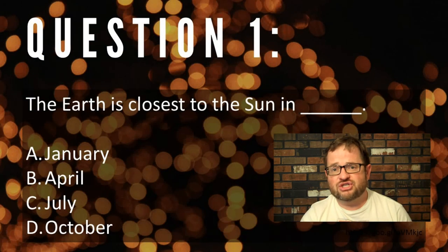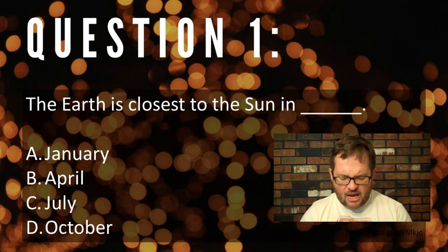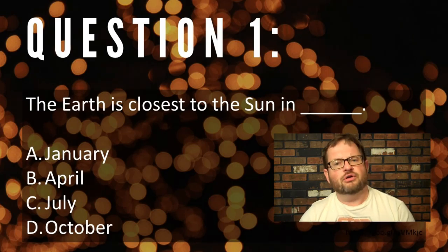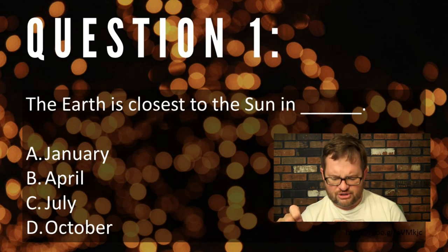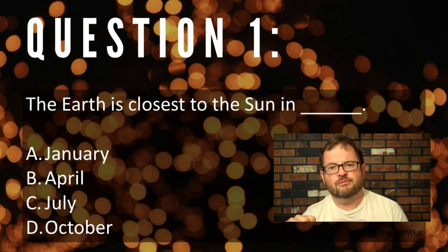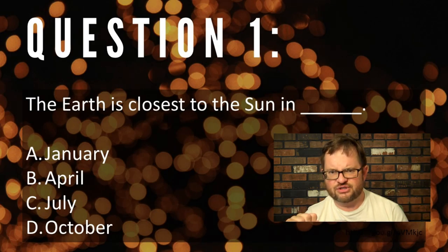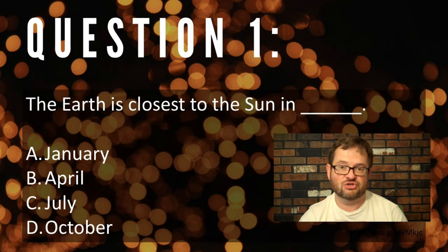Before we move forward, let's take a couple of quick review questions. The Earth is closest to the sun in January, April, July, or October — when is that date? Make a choice from those four options and get a little feedback before you move on to question two.